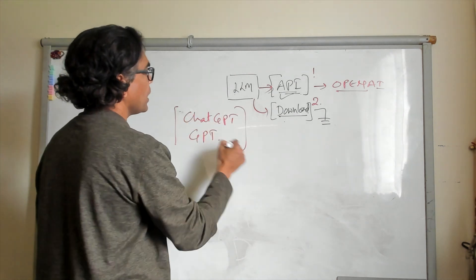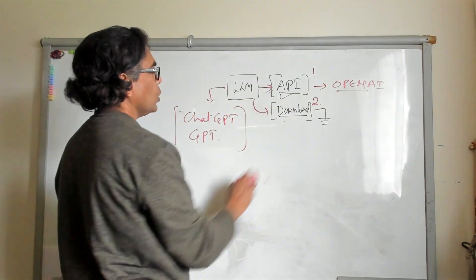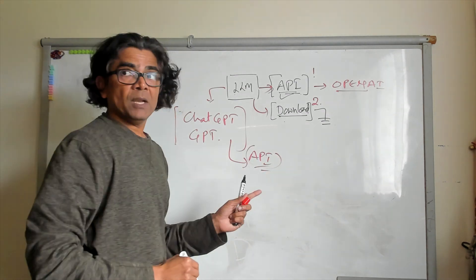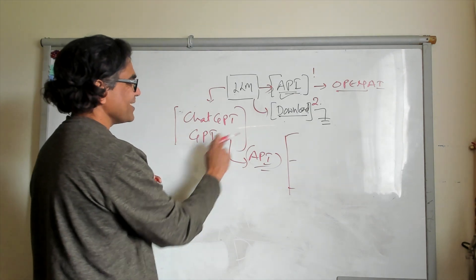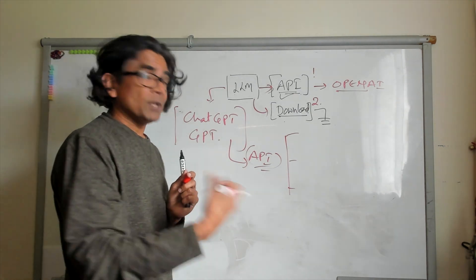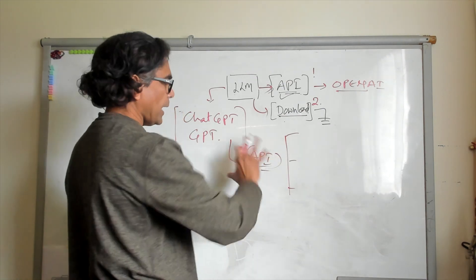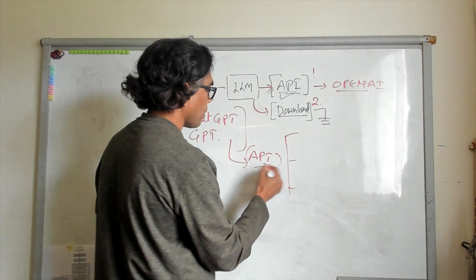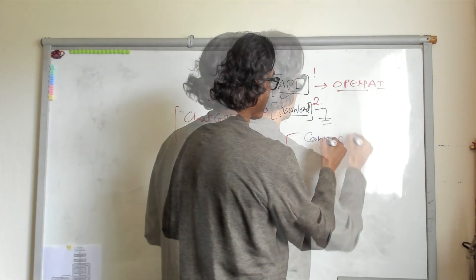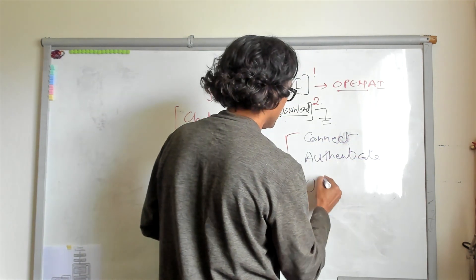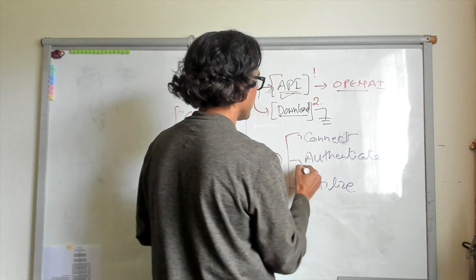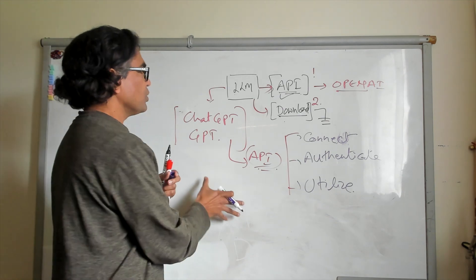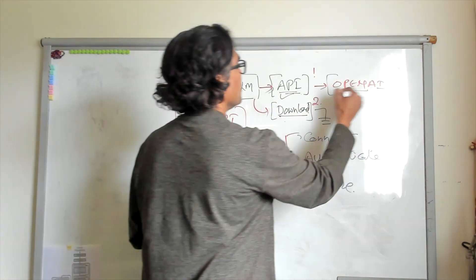These are the various large language models available in OpenAI, and the only way you can access them is through the API. With the API, you just really need to know how to access the endpoints where the models are available, connect your code, and authenticate yourself. Once authentication is done, you can start writing your application. So for the API you connect, authenticate, and then utilize — those are the three steps to consume any large language model accessible only through the API. An example is OpenAI.